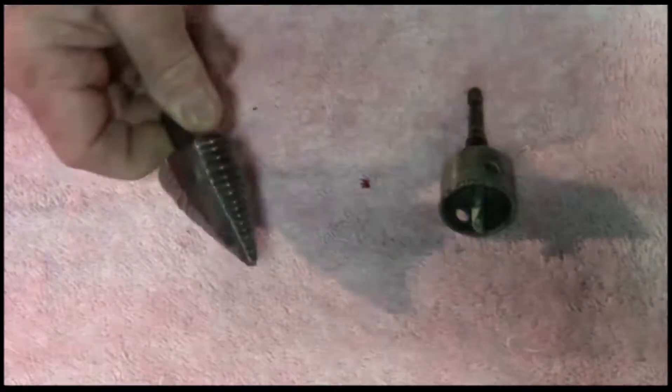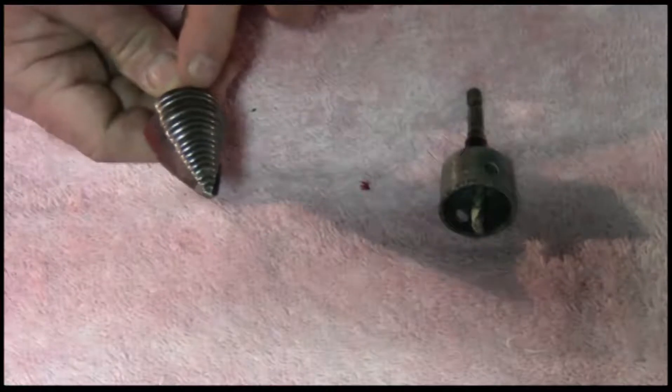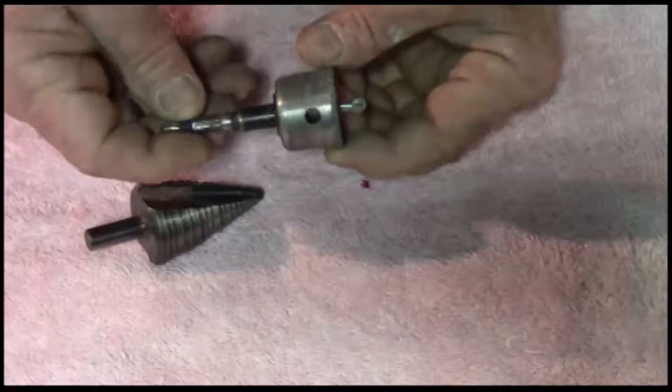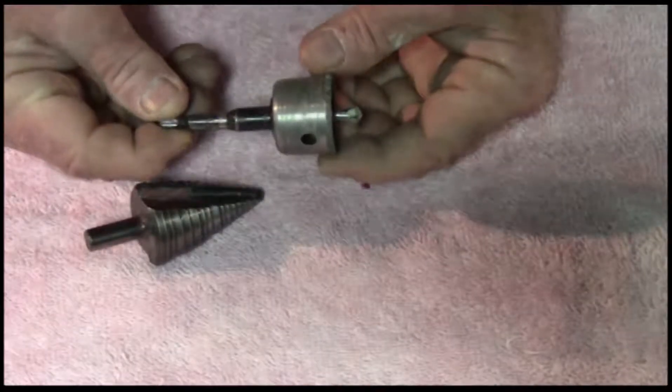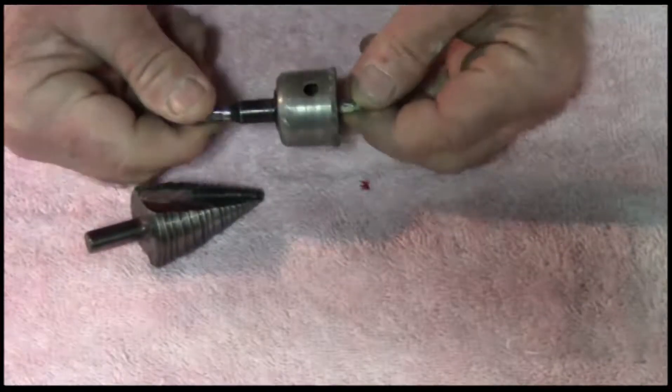This is a unit bit and it will drill a hole from a quarter inch all the way to an inch and a quarter. This bit is used for going through stucco. This will go through about everything except wood.